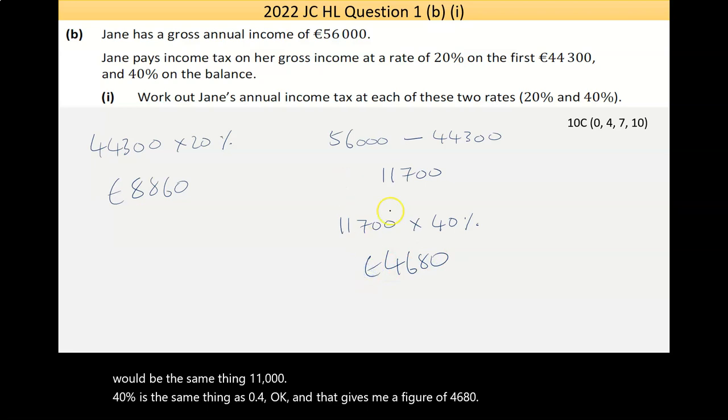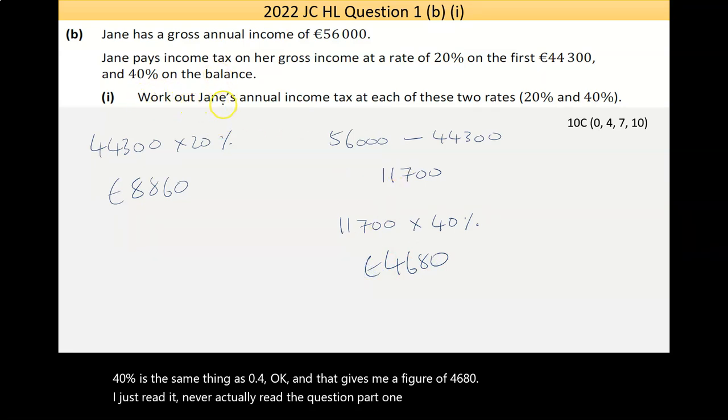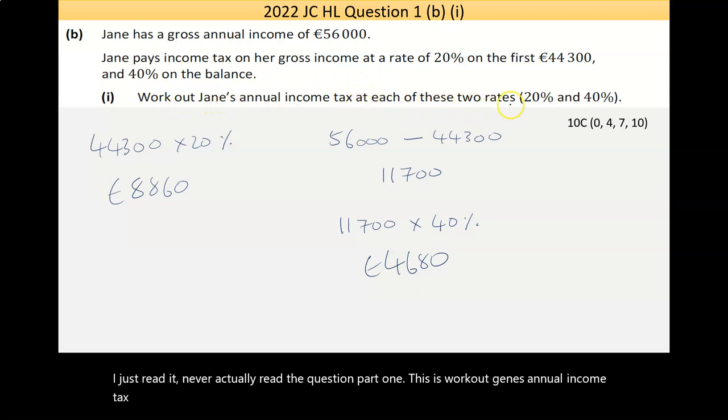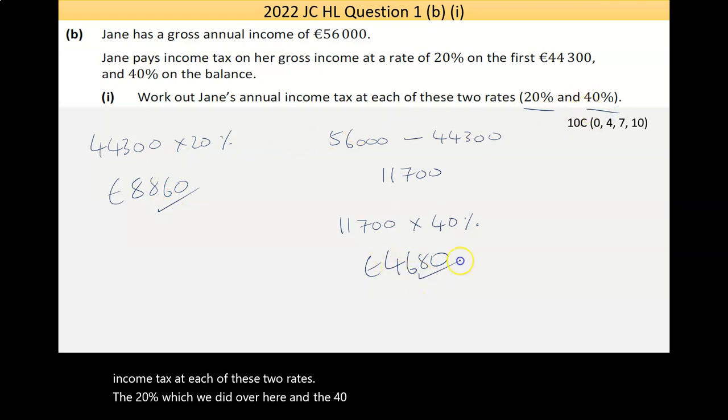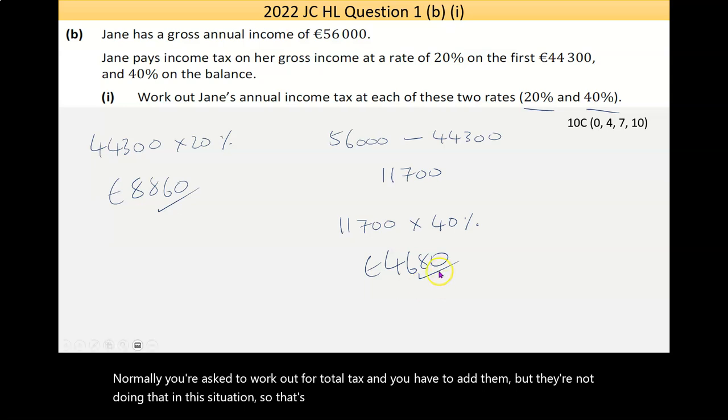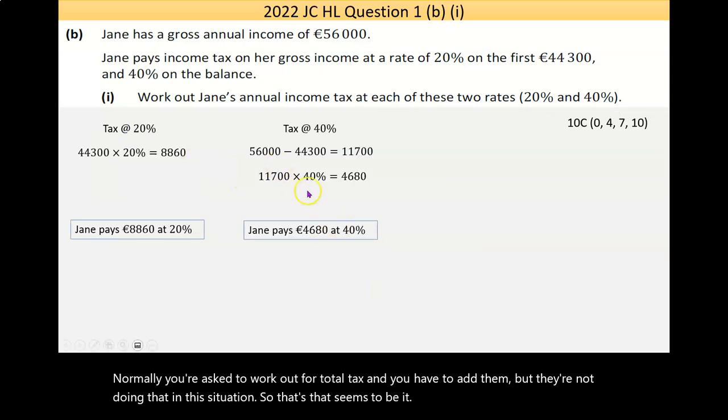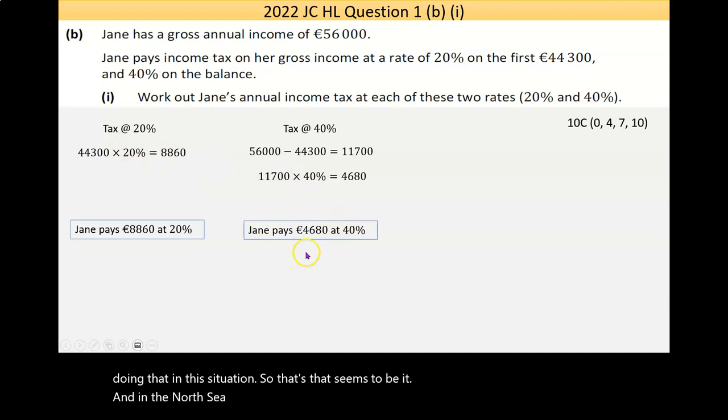I just realized I never actually read the question. Part one, this is work out Jane's annual income tax at each of these two rates. The 20%, which we did over here, and the 40%, which we did just here. Now normally you're asked to work out total tax. You'd have to add them. But they're not doing that in this situation. So that seems to be it.